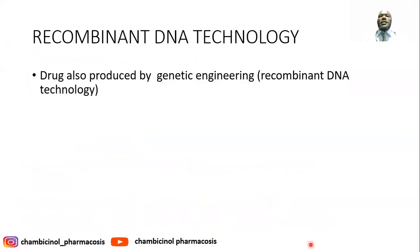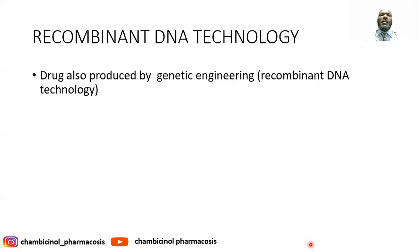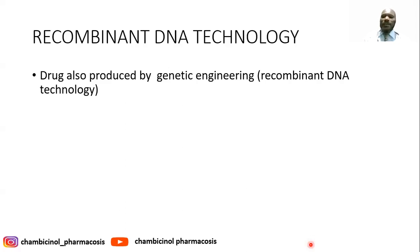We also have another technique called recombinant DNA technology, which involves the utilization of genetic engineering to synthesize drugs. For example, human insulin: you can take a small amount of human insulin gene and insert it into a microorganism such as E. coli. When the bacteria undergoes multiplication, it will multiply along with the human insulin gene, and at the end you separate, purify, and use it as a drug.